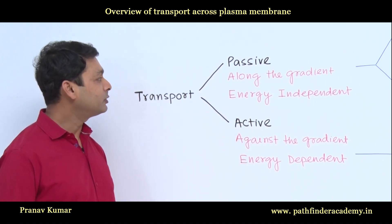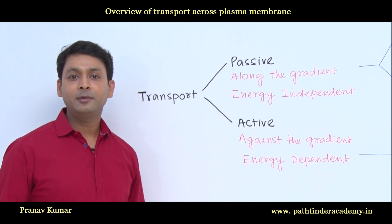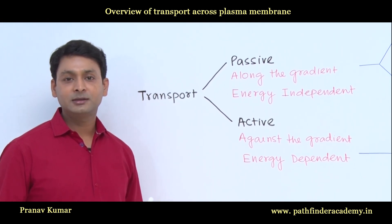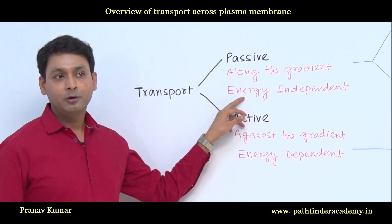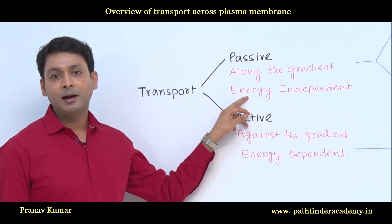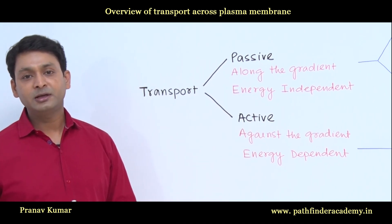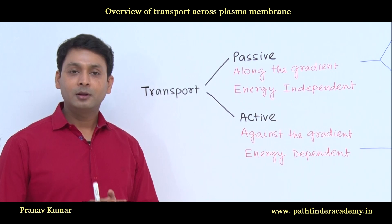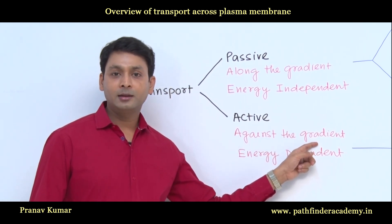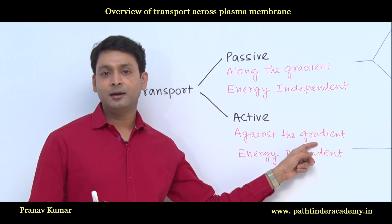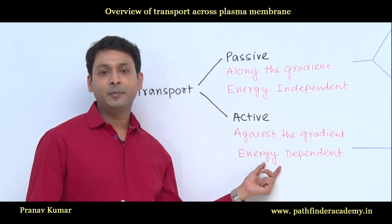Passive transportation always occurs along the gradient, and this gradient can be the electrochemical gradient or the concentration gradient. The process is energy independent — no external source of energy is required. Whereas, in active transportation, the process occurs against the gradient, which can be the concentration gradient or the electrochemical gradient, and the process is energy dependent.